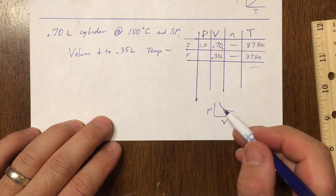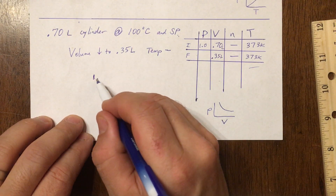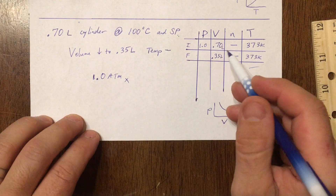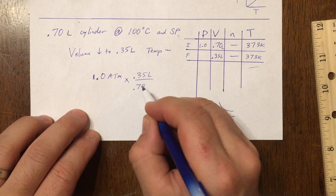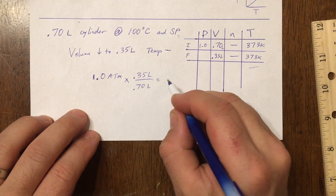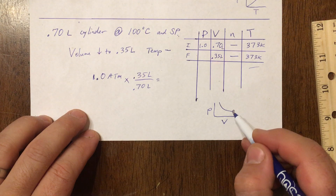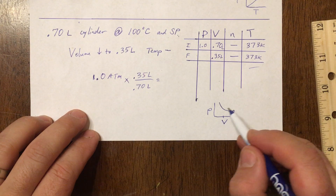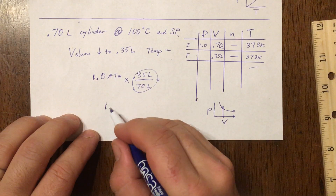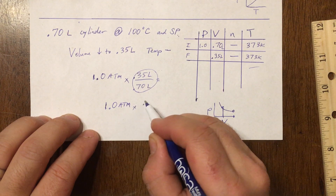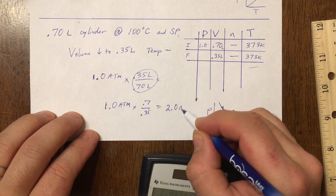If volume drops in half, pressure should double. Starting with one atmosphere, my volume drops from 0.70 liters to 0.35 liters. Since this is an inverse relationship, I flip the volume factor: one atmosphere times 0.70 over 0.35. This doubles my pressure, giving me 2.0 atmospheres.